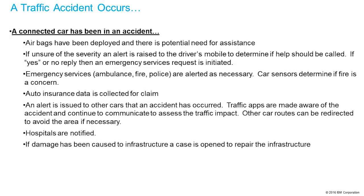Let's say we have a connected car that's been in an accident and the airbags have been deployed. If it's a very severe accident, the car might be able to detect that and immediately call for help. If it's not sure, an alert is raised to the driver's mobile phone — they can say yes, they need help, or if they don't reply, that might also indicate they need help. A call can be put out to emergency services — an ambulance, fire, or police. The car sensors might determine which are required. Insurance data could also be collected and made available through an API later.